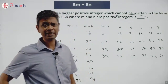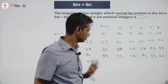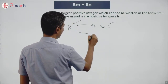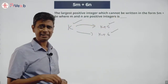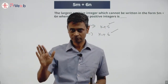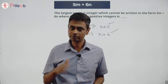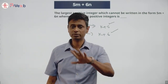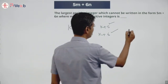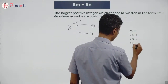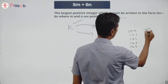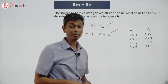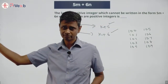Key pattern: if I have any achievable number k, then k+5 and k+6 are also achievable. So if I have 103, I can get 108 and 109. More importantly: if at any point I have 5 consecutive achievable numbers — say 100, 101, 102, 103, 104 — then 105, 106, 107, 108, 109 are all achievable, and by induction every natural number after that is achievable.